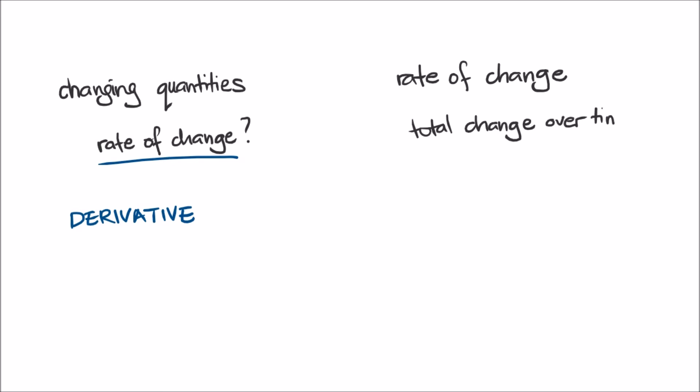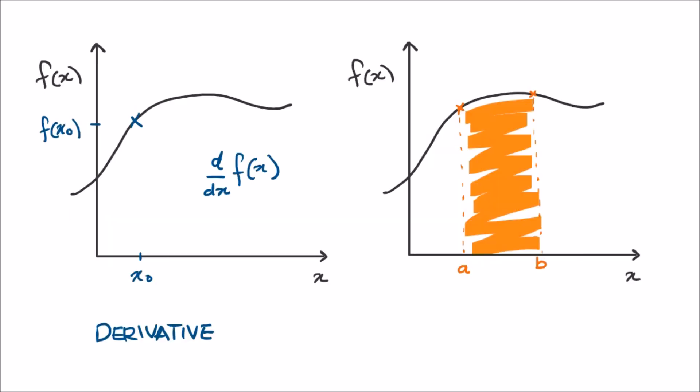When you know the value of a changing quantity at all times, like speed for example, and determine how much the quantity is changing with time, then you are differentiating or finding a derivative. When you know how much the quantity is changing with respect to time, and determine what the total change is over a period, then you are integrating. We will look at these two concepts, derivative and integral, when we get to the technical sides of calculus later.